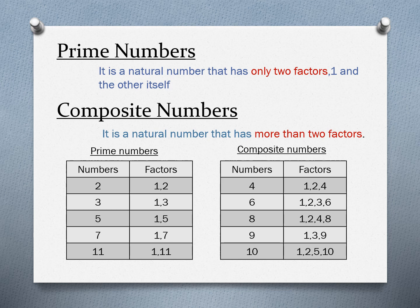Prime numbers — a prime number is a natural number that has only two factors: one and itself. Composite numbers — a composite number is a natural number that has more than two factors. Look at the examples of prime numbers: factors of 2 are 1 and 2; factors of 3 are 1 and 3; factors of 5 are 1 and 5; factors of 7 are 1 and 7.